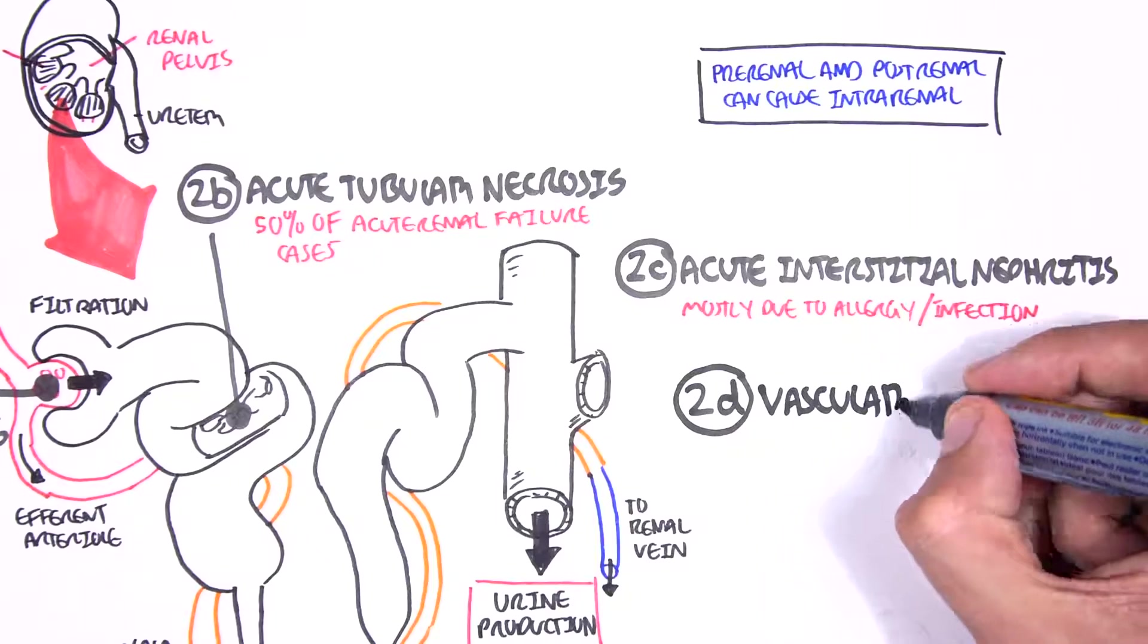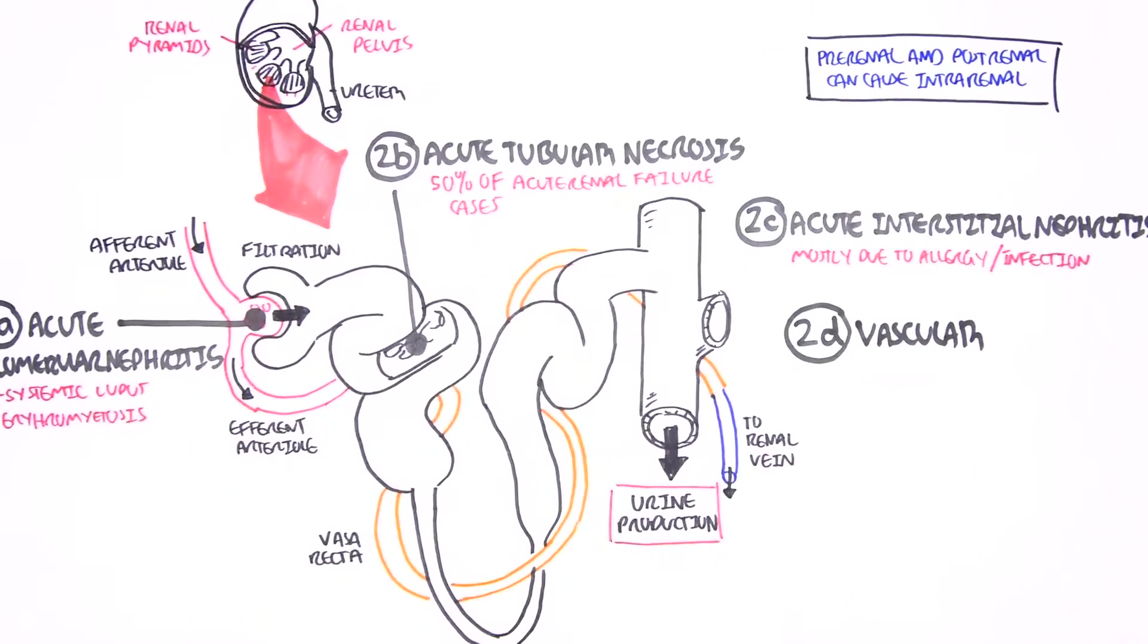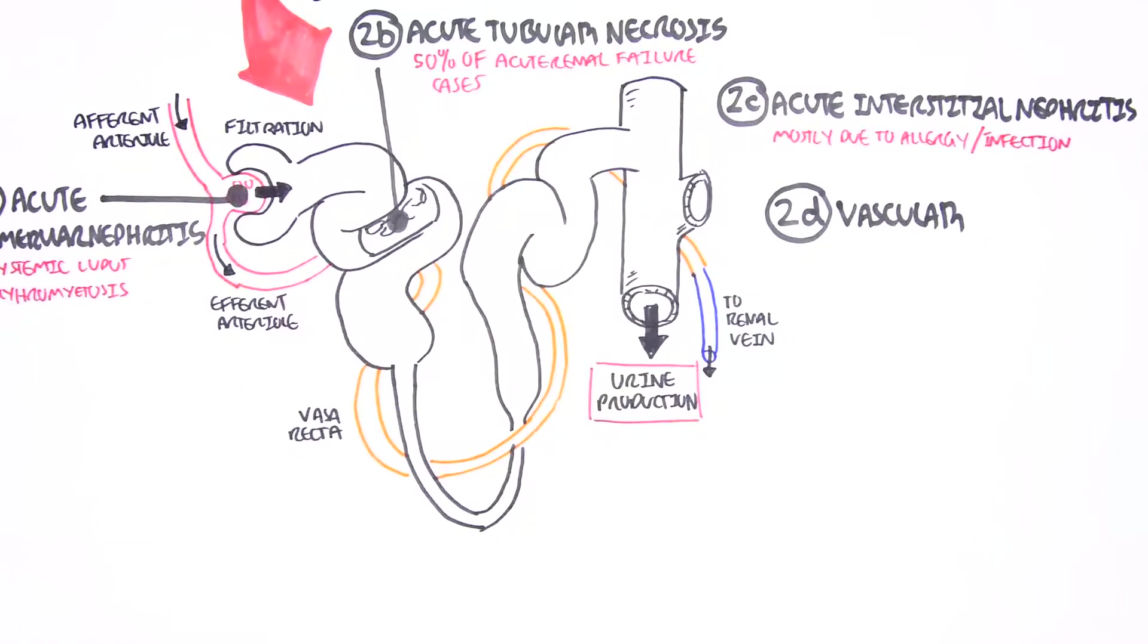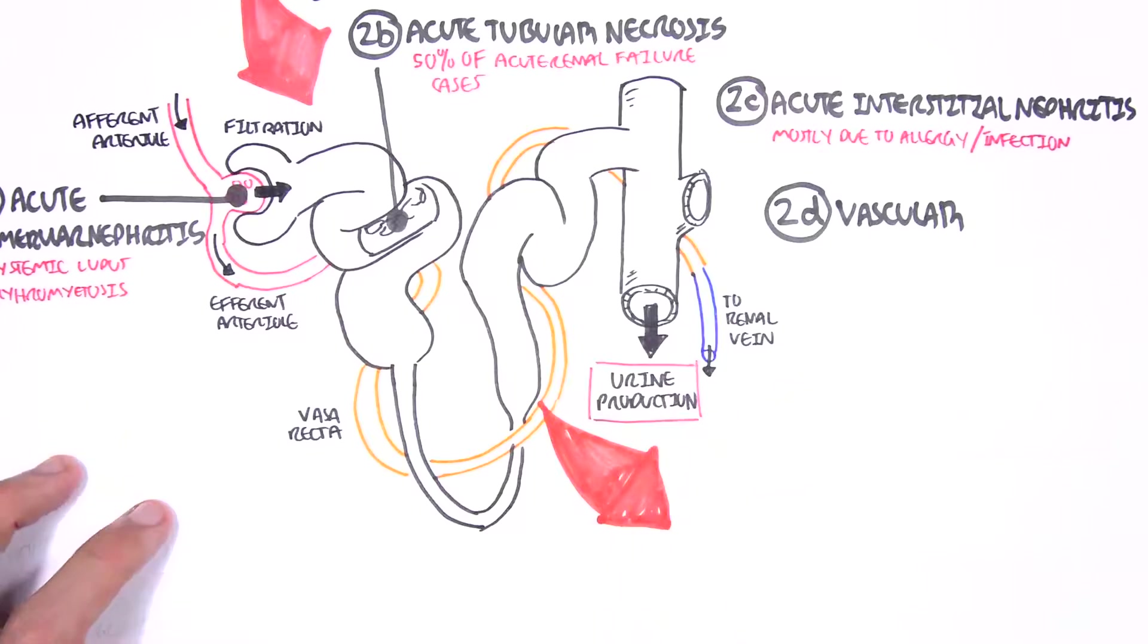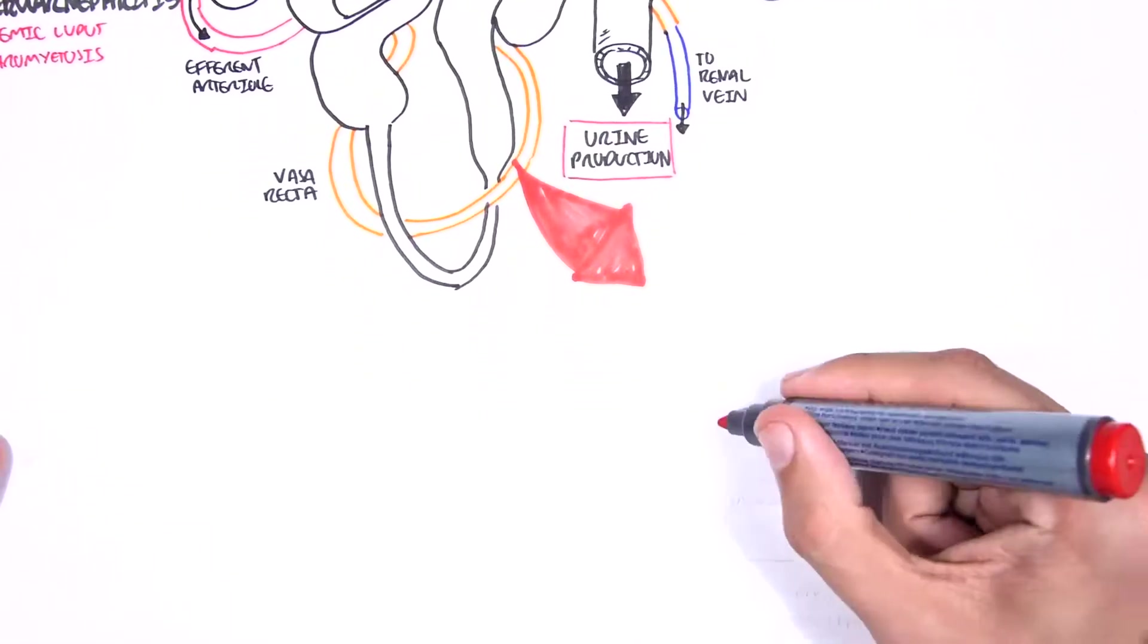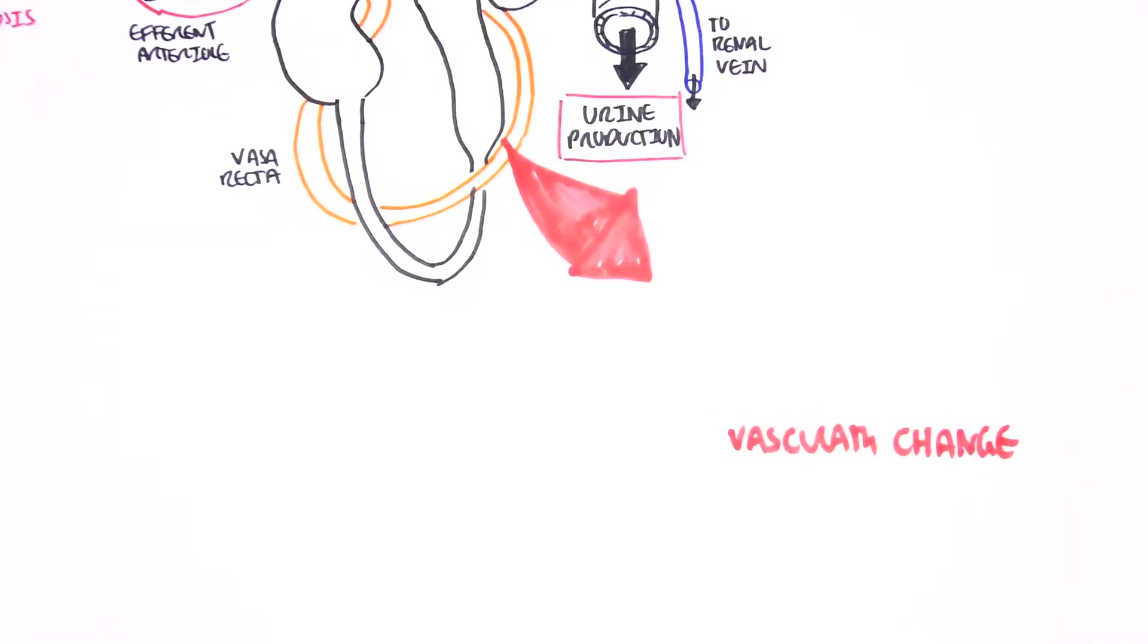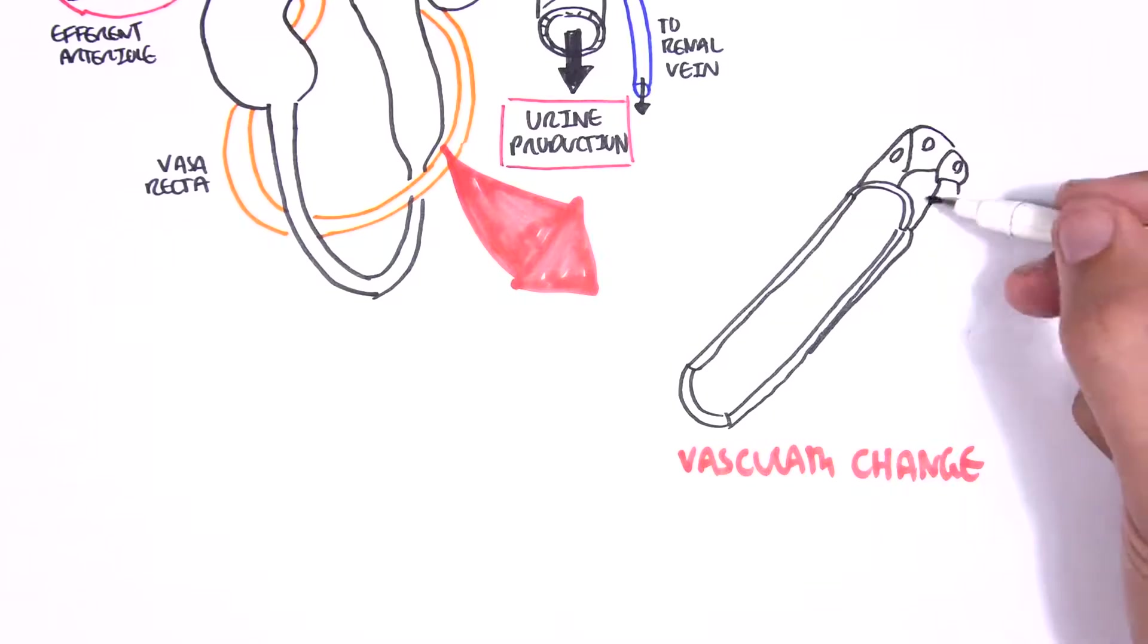We know that acute renal failure is characterized mainly by a decrease in the glomerular filtration rate, or GFR. Why do we have this characteristic of a decrease in GFR? Well, it can be basically caused by two main changes. The first is vascular change where we see endothelial dysfunction.